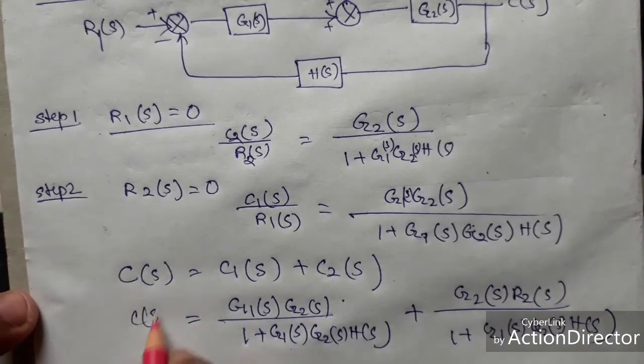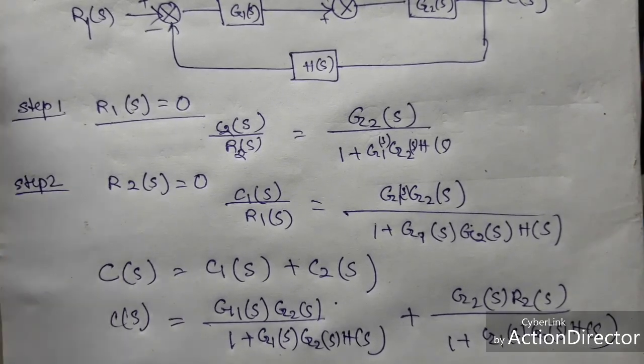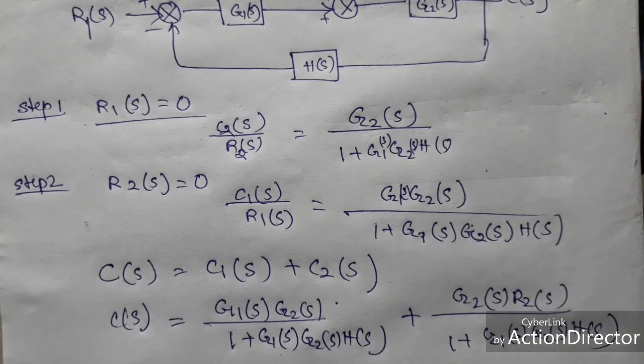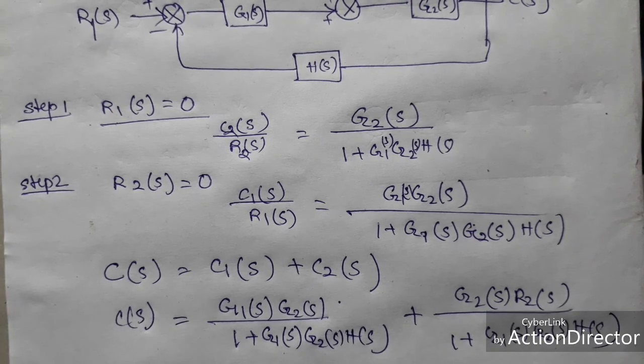So this is the final output for the MIMO system. So this is the basic difference of the SISO and MIMO system. That's all. If you have any query please comment on the below video section. Thank you for your kind attention. If you like my video please subscribe my channel. Thank you.